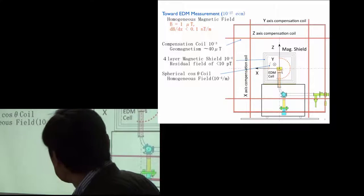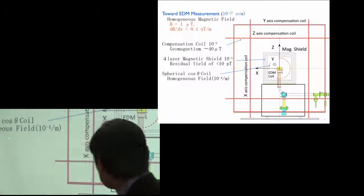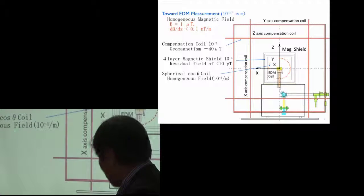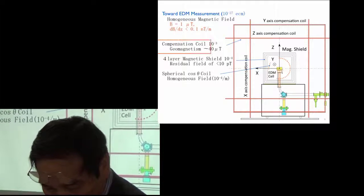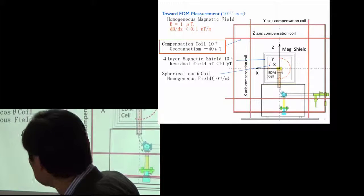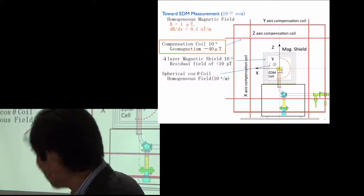And using the spherical coil, we would like to have a very homogeneous magnetic field. And today I would like to talk about the compensation coil.